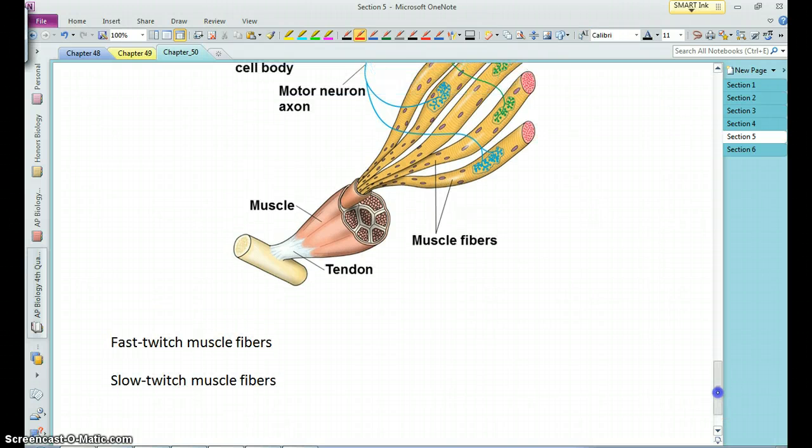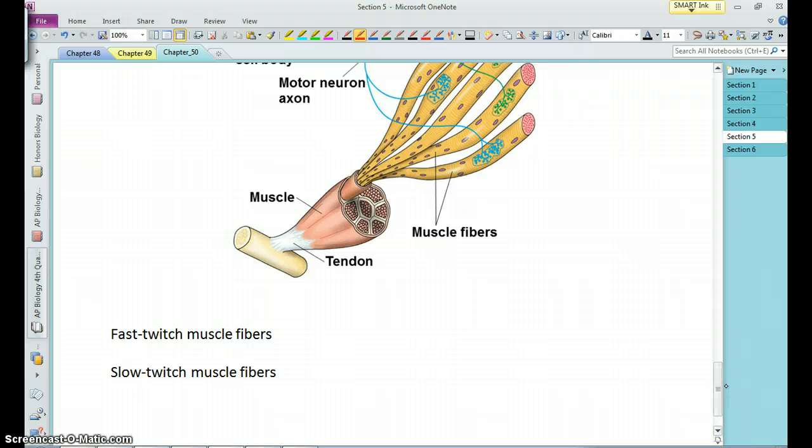They're broken into two groups, fast-twitch and slow-twitch muscles. This has to do with the strength at which contractions occur and the time that a contraction can be held. The fast-twitch muscles are ones that allow for brief, powerful contractions.